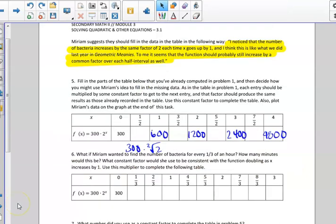So then we moved on to number five. And we read that Miriam suggests that we fill in the table using her strategy. She notices that the number of bacteria increases by the same factor of two, which we've just discussed from problem number one on the previous page. To Miriam, it seems that the function should probably still increase by a common factor because it is a geometric sequence over each half interval.